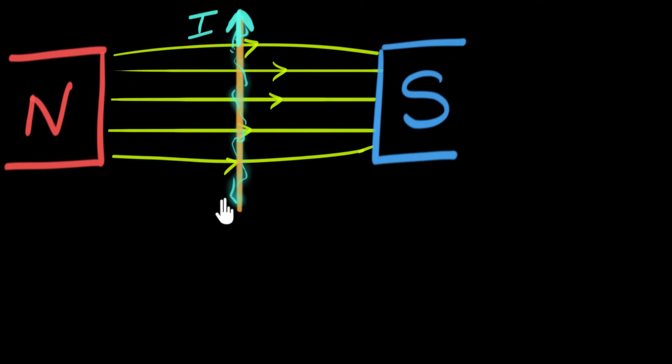Because the action and reaction forces are opposite in direction, we will figure out in what direction the wire pushes on the magnets, and then in the opposite direction the magnets will push on the wire. So let's first figure out in what direction the wire pushes on the magnets.